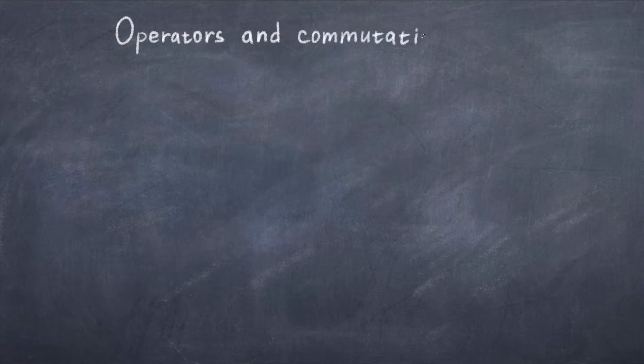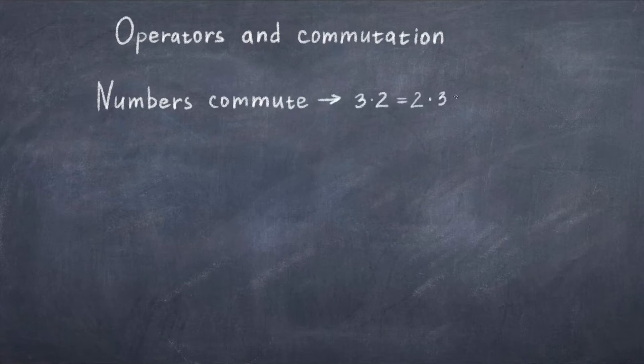In a previous video about the uncertainty principle, we got introduced to the new mathematical object called the operator. As discussed in that video, operators are a key to how quantum mechanics work. If you didn't see that video, feel free to check it out, but let us anyway do a quick recap. In quantum mechanics, we generally replace numbers with operators.